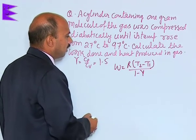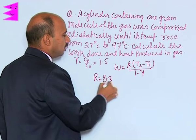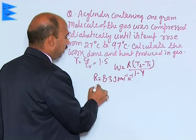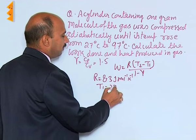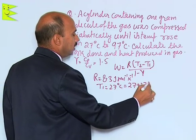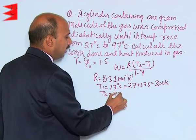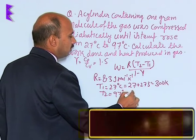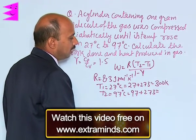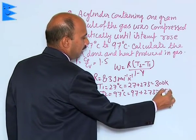Now, we can write here in this case value of R is 8.3 joule per mole per Kelvin. T1 is given to you 27 degrees Celsius is equal to 27 plus 273, 300 Kelvin, and T2 is given to you 97 degrees Celsius is equal to 97 plus 273, that will be coming here 370 Kelvin.